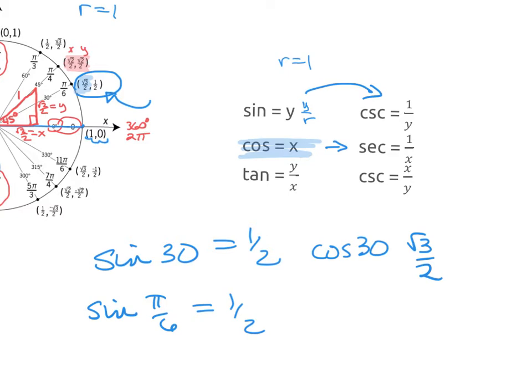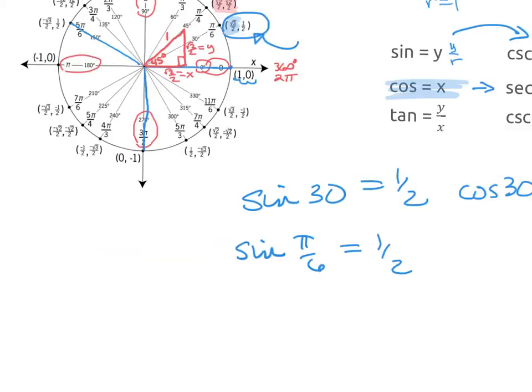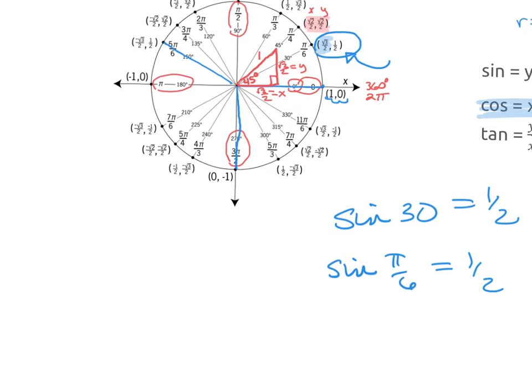The reciprocal of sine is cosecant, so you just put 1 over y. Cosine is x. Secant is the reciprocal, so 1 over x. Tangent we have to work for. So let's take a look at tangent of 30.